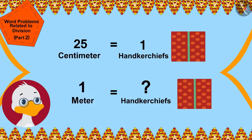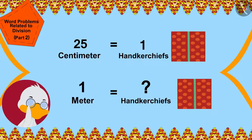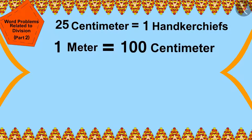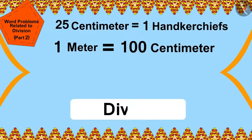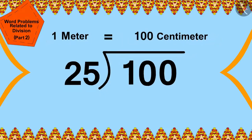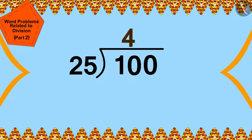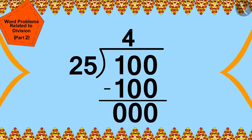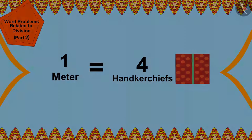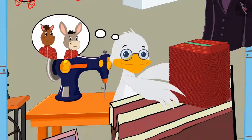Cha Cha wondered: one meter is equal to 100 centimeters. I can find this answer by dividing 100 centimeters by 25. In this way Cha Cha divided 100 by 25. Cha Cha will be able to stitch four handkerchiefs with one meter long cloth.